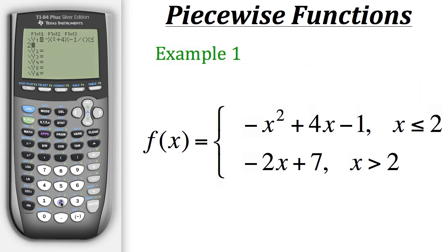And now we put in 2, and then close the parentheses. So as of right now in our Y1, we have the first expression in our piecewise function, as well as its condition, which we state at the end.